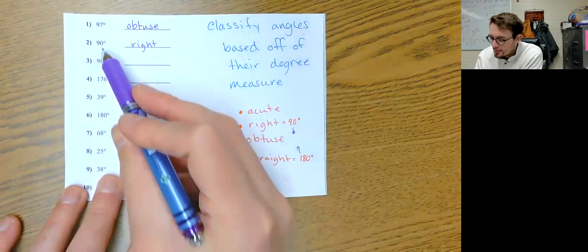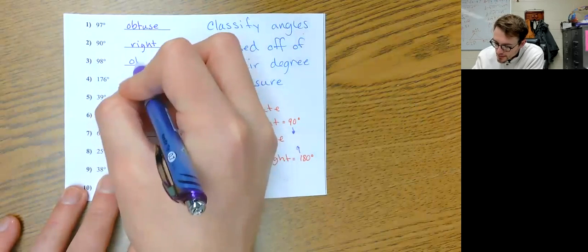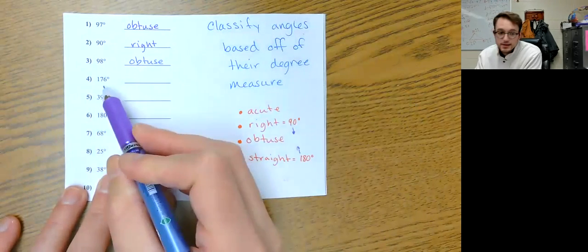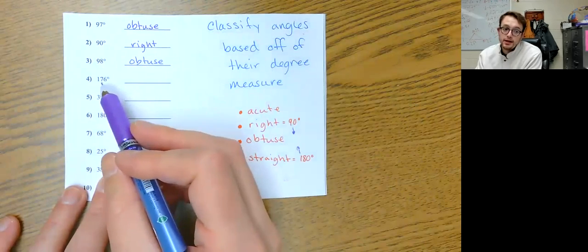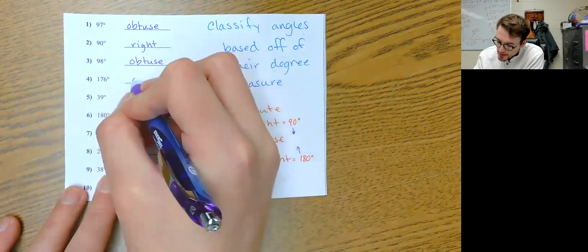98 is again between 90 and 180, so this is obtuse. This is also between 90 and 180, but cutting it really close, but this is still obtuse.